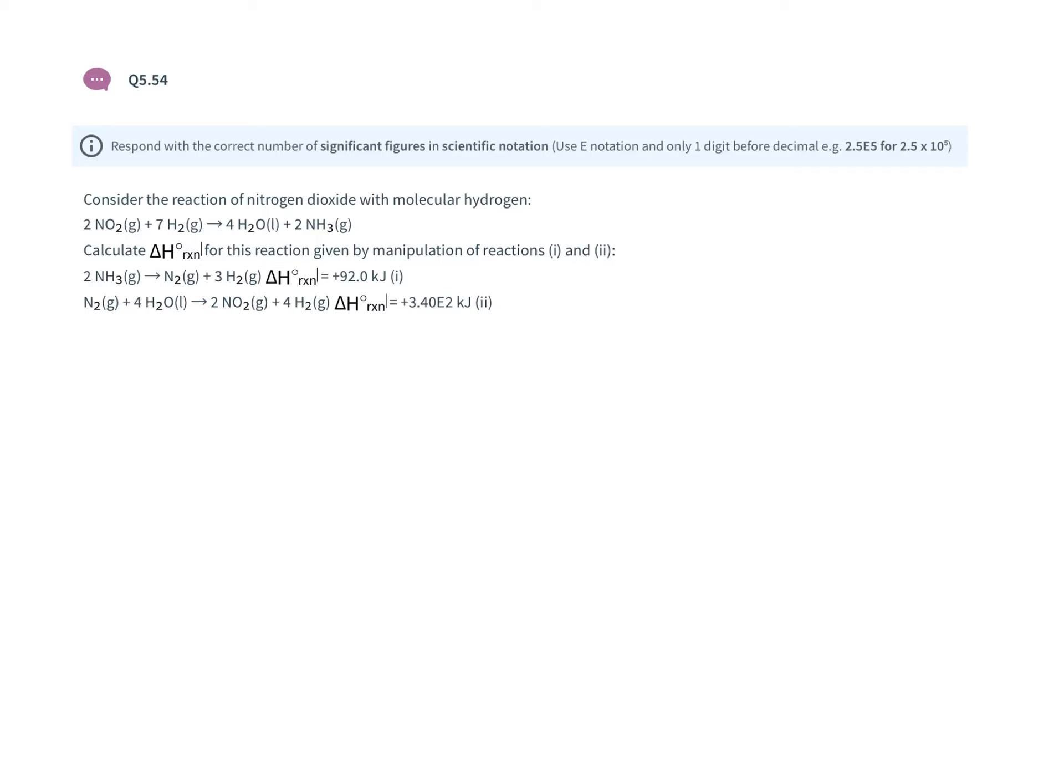We're asked to find the ΔH for nitrogen dioxide reacting with hydrogen to produce water and ammonia. This is a Hess's law calculation. We need to manipulate these two given reactions to obtain the unknown reaction.